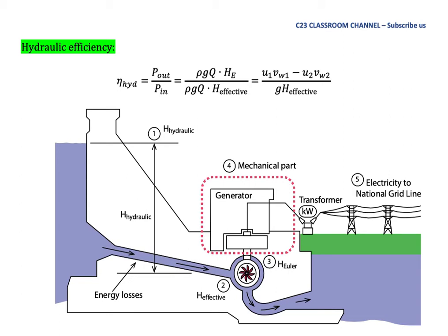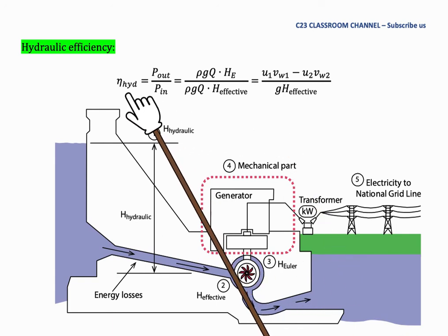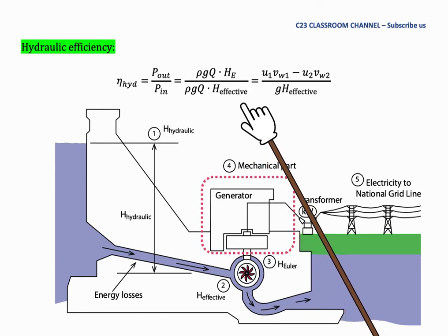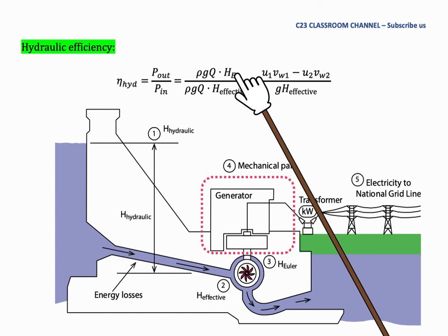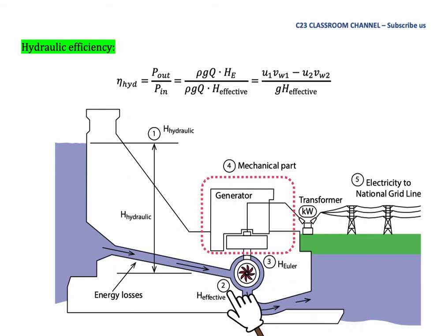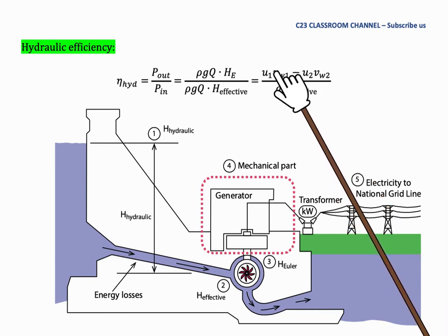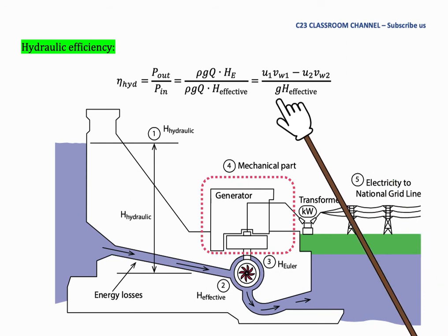Hydraulic efficiency can be defined as power out divided by power in. From this diagram, the power input for this Francis turbine is H_effective, and the power output is the Euler head. So we could write hydraulic efficiency as ρGQ·H_Euler over ρGQ·H_effective. If energy losses can be neglected, we could take the hydraulic head as the power input. Hydraulic efficiency can also be written as (U1·Vw1 - U2·Vw2) / (g·H_effective).